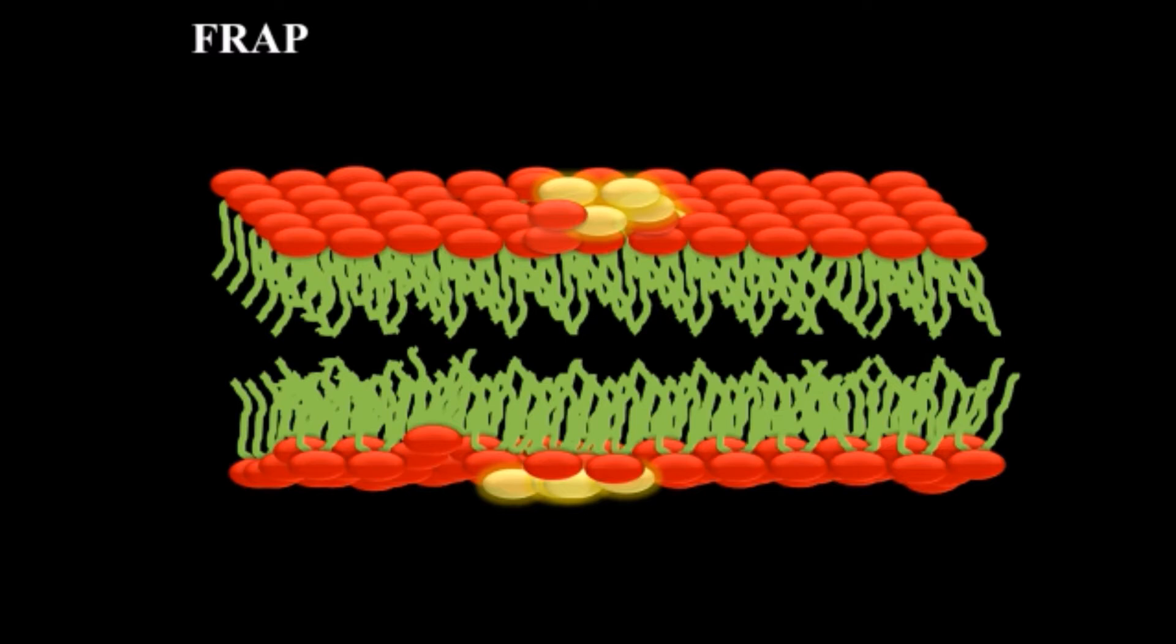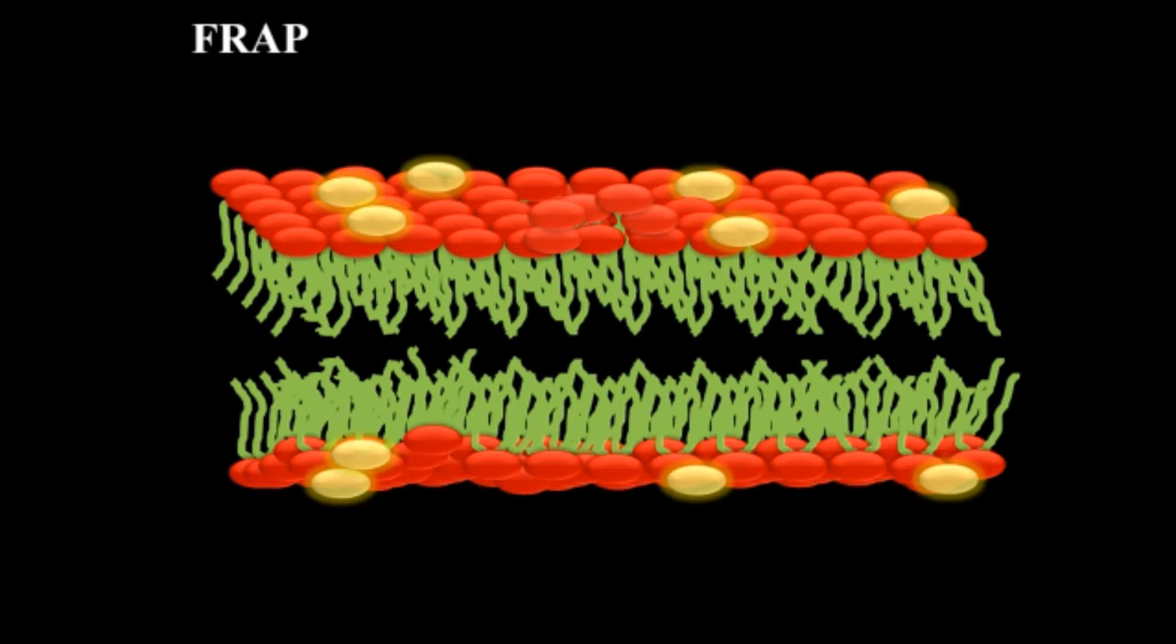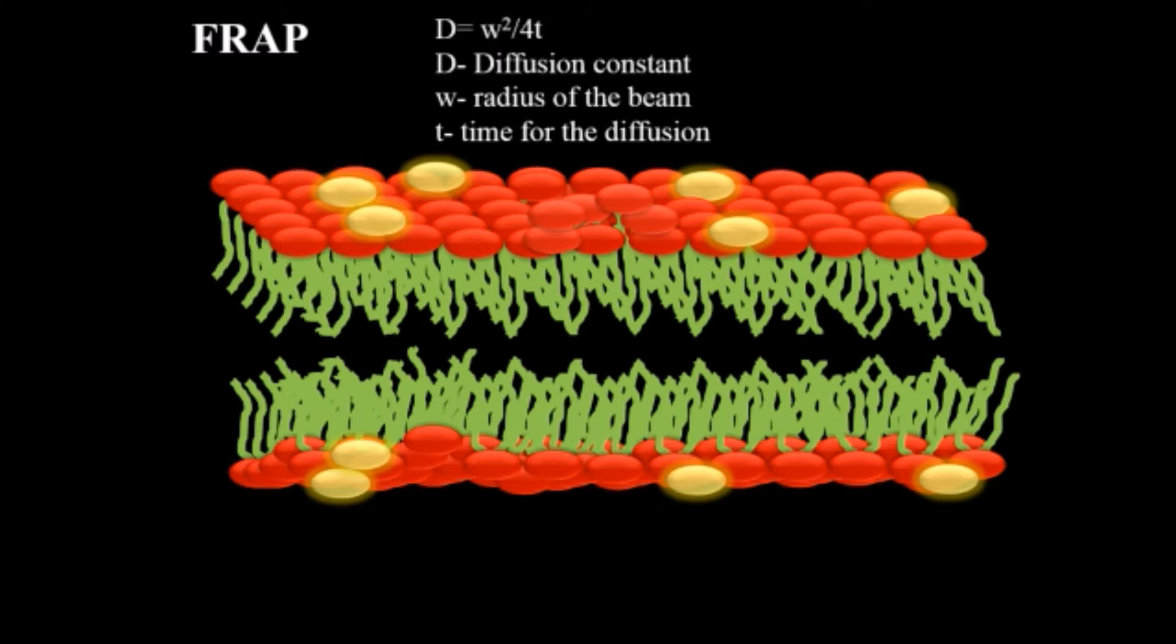After it gets photobleached, as we know that lipid has certain lateral movement, so it will start moving towards its convenient positions. And because of this, this photobleached area or the intensity of the fluorescence which was bleached because of this light now gets recovered and the rate of diffusion we can calculate.